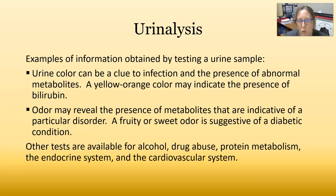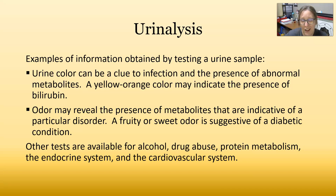Urine color can also be a clue to infection and the presence of abnormal metabolites. For example, a yellow-orange color could indicate the presence of bilirubin. Odor can also reveal the presence of metabolites indicative of a particular disorder — a fruity or sweet odor is suggestive of a diabetic condition, while a really strong ammonia odor might be indicative of an infection.